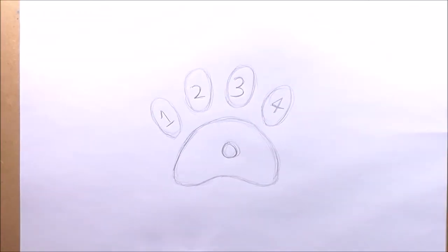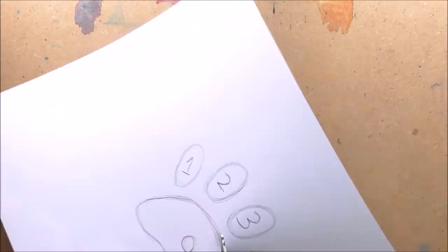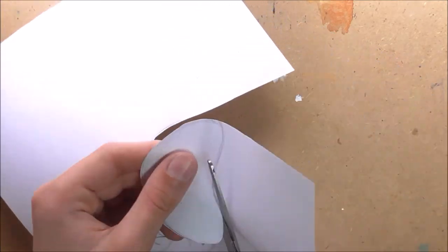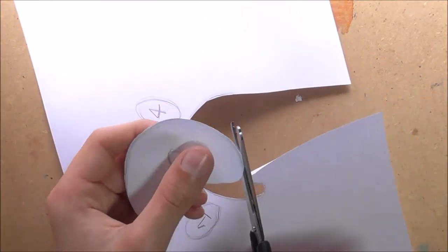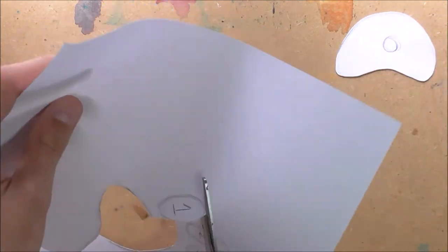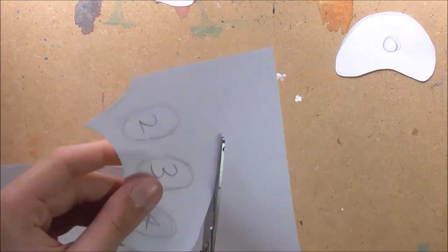When you're actually drawing out your design, what you can do is go into Google and just google the type of paw print that you'd like and then just put silhouette at the end of the words. What will happen is it will just come up a black solid print, and therefore you can just use them as your references, which I find are really helpful.